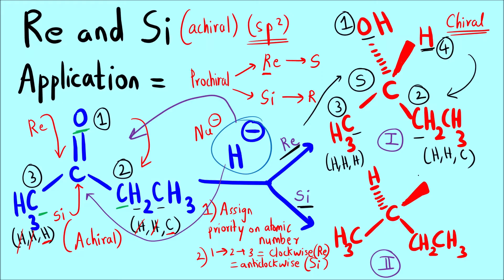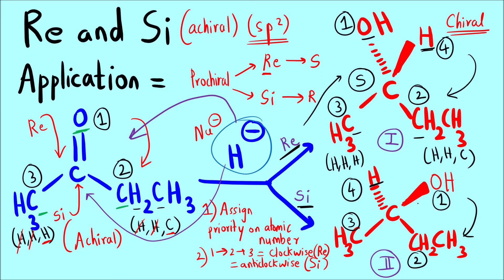Now for the si face product: we assign priorities the same way. From 1 to 2 to 3 it is clockwise, and now the fourth priority is on a dash bond, so the stereochemistry remains R. So for the si notation the absolute configuration is R. This confirms: if the nucleophile attacks from the re face, the product stereochemistry is S; if from the si face, it is R.